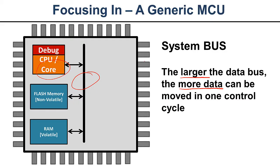This is the conclusion of the first half of looking at what's inside a microcontroller. In part two, we're going to take a look at the other stuff — what I'm going to call the good stuff — and how to pick a microcontroller. Hope to see you soon.